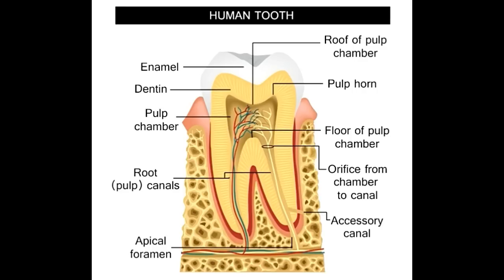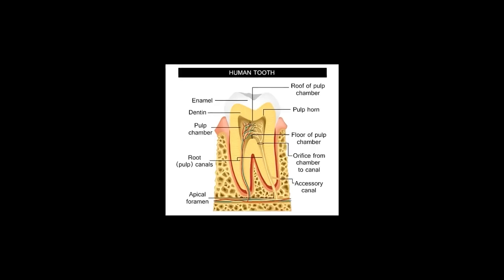Enamel: The crown or the visible part of teeth is covered by enamel, which is a grayish-white/translucent tough mineralized tissue that is formed by ameloblasts. Hydroxyapatite, which is a naturally occurring mineral form of calcium apatite, provides rigidity to the teeth. The enamel is the hardest tissue in the body that protects the teeth from temperature changes or stress/pressure during mastication. Though enamel is very tough, protecting the teeth from chemical reactions or force exerted while chewing, biting, crunching, and grinding, it doesn't contain living cells.